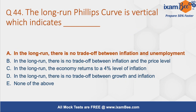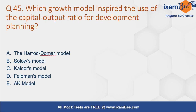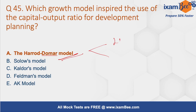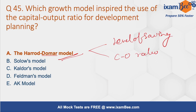Option A is the correct answer for question 44. Question number 45: Which growth model inspired the use of the capital output ratio for development planning? The answer is the Harrod-Domar model. The Harrod-Domar model suggests that economic growth depends on two things: the level of savings and the capital output ratio.